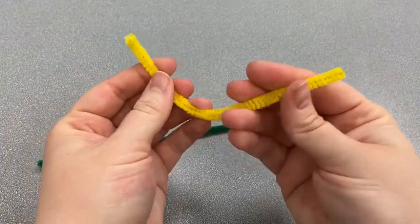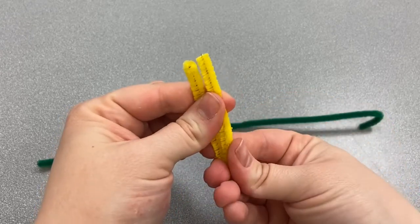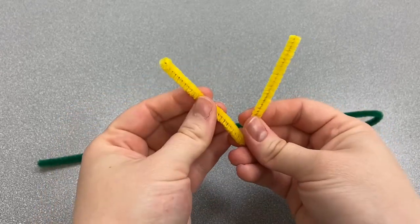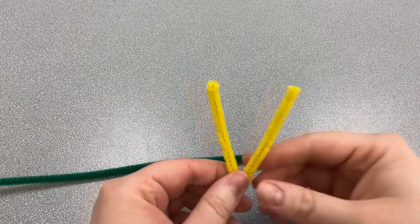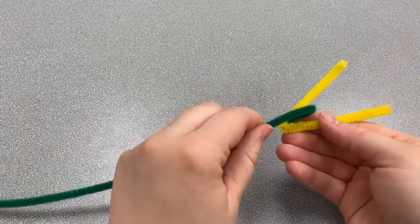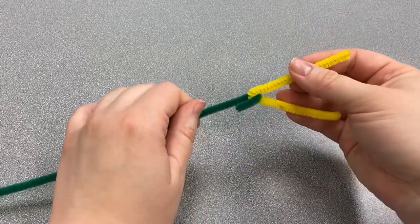Then we're going to bend our half of our yellow pipe cleaner in half again to make a little V. We're going to take our little V and we're going to hook it into our J so that it looks like this.